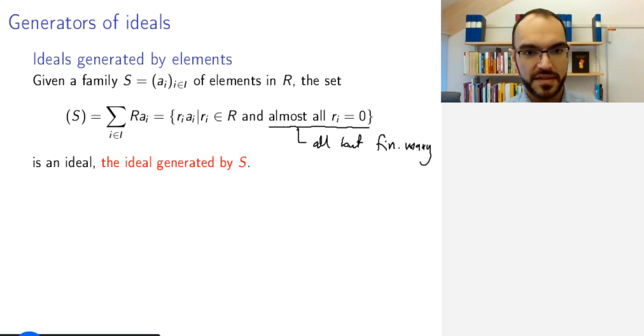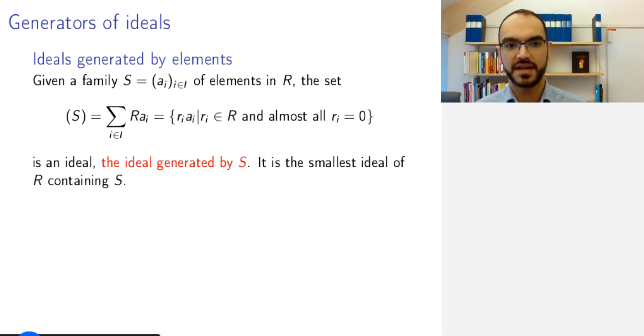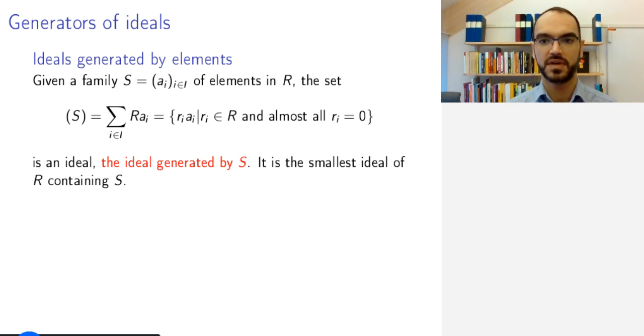You can check that this is an ideal, the ideal generated by the set S. It's the smallest ideal of R containing S because we have only added to S the things that are necessary to close it with respect to addition and multiplication with general elements.